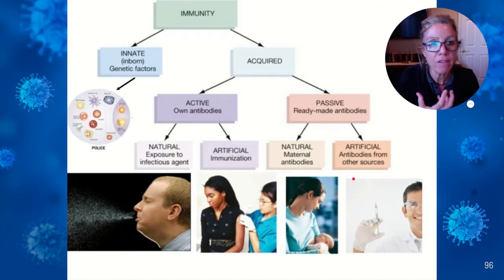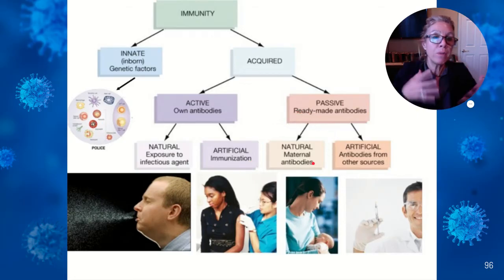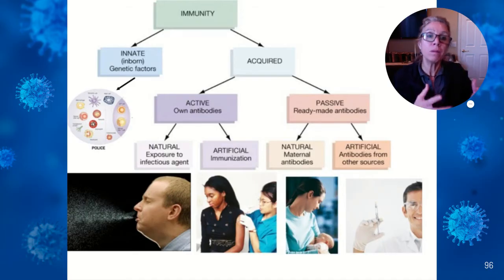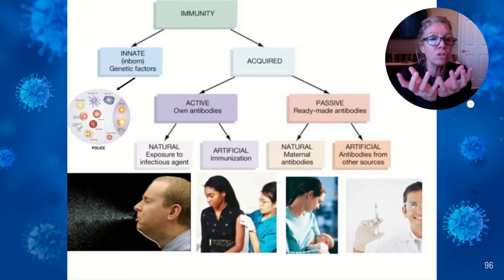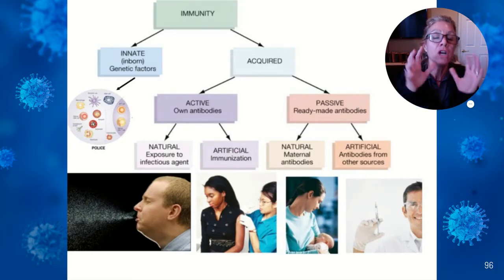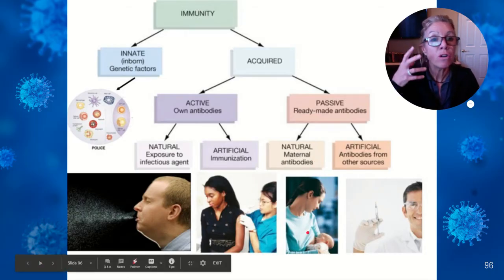Passive immunity is when you're in a time crunch — you've been exposed to something like a snake bite and don't have time to develop antibodies. You'd get a gamma globulin shot, which is just a shot of antibodies right now. That is short-lived immunity because you're borrowing it temporarily. Passive immunity also occurs when a mother breastfeeds. When the baby is in utero, your antibodies pass across the placenta to your baby. Once born, you want to keep the baby protected in the home so it can start to develop its adaptive immunity.